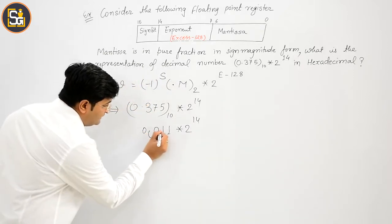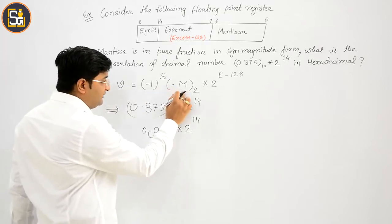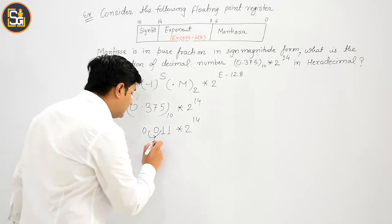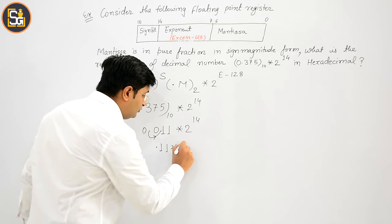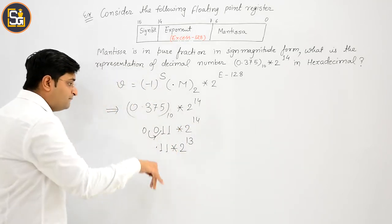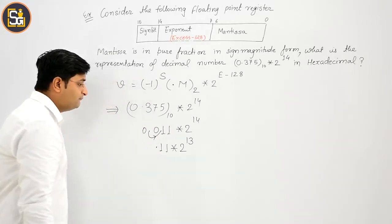Now, चूंकि आपका procedure - point इस चीज से match करने के लिए, आपको point right की side खिसकाना है. Now, 0.11 into 2 की power 13, क्योंकि हम right side गए, तो एक पावर आपकी क्या होगी - गड़ जाएगी. Clear है.